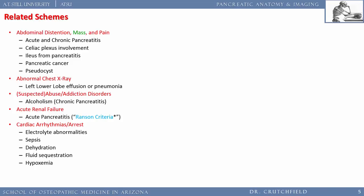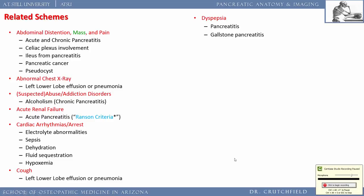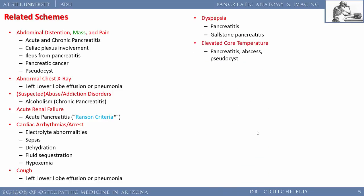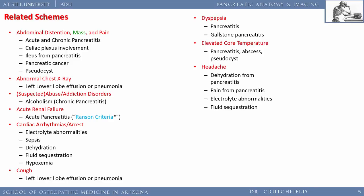Pancreatitis presents with fluid and electrolyte abnormalities leading to sepsis, dehydration, fluid sequestration, and hypoxemia. Pneumonia and effusion can lead to cough. Patients often present with epigastric pain and right upper quadrant pain from pancreatitis or gallstone pancreatitis. Fever can result from pancreatitis, pancreatic abscess, or a pseudocyst. Headaches can arise from dehydration, pain, electrolyte abnormalities, and fluid sequestration.